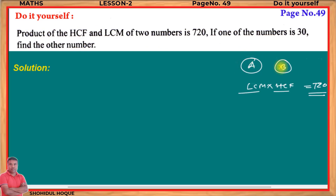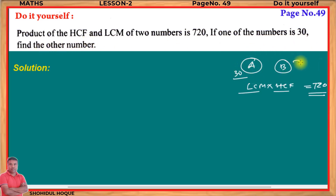Let us take the two numbers as a and b. It is given that if one of the numbers is 30, let a = 30. We need to find the other number b.